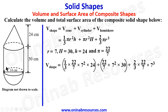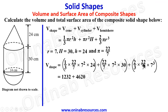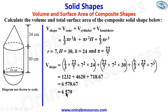Simplifying each term: the volume of the cone gives 1,232; the volume of the cylinder gives 4,620; and the volume of the hemisphere gives 718.67. Summing them up gives 6,570.67, which rounded to 3 significant figures is 6,570 cubic centimeters — the volume of the composite solid shape.